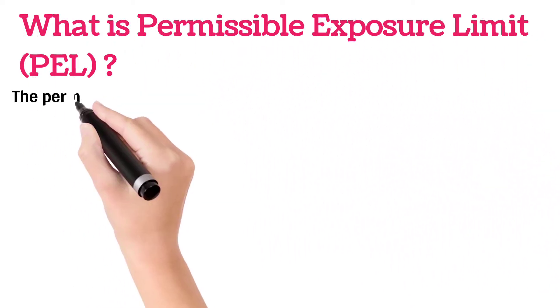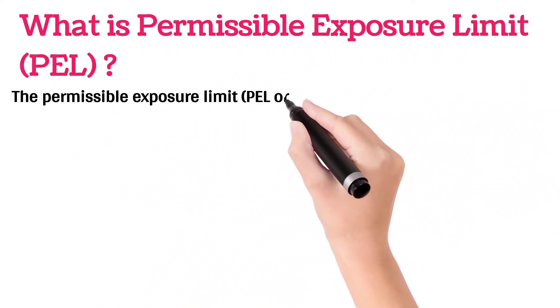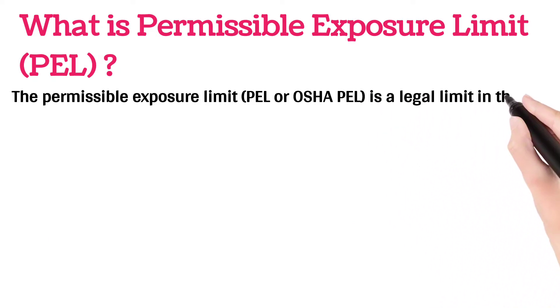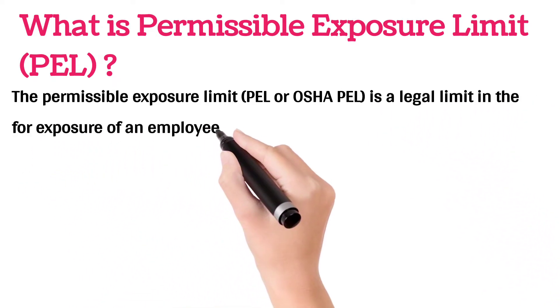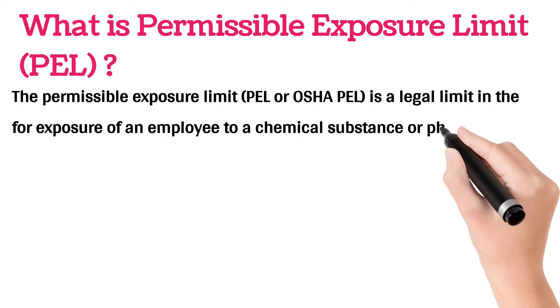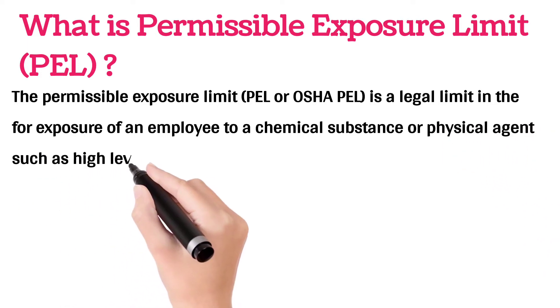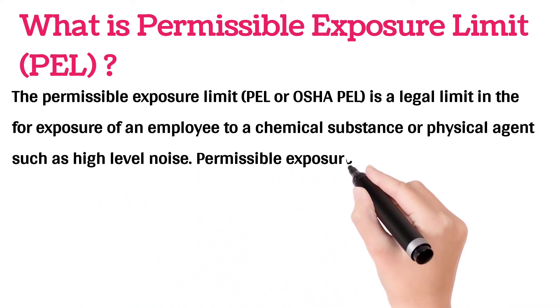What is a Permissible Exposure Limit? The Permissible Exposure Limit (PEL), or OSHA PEL, is a legal limit for the exposure of an employee to a chemical substance or physical agent, such as high-level noise. Permissible Exposure Limits are established by the Occupational Safety and Health Administration (OSHA).